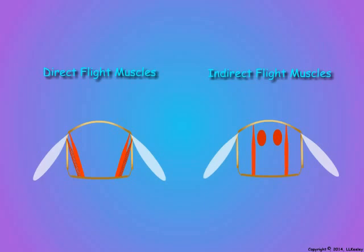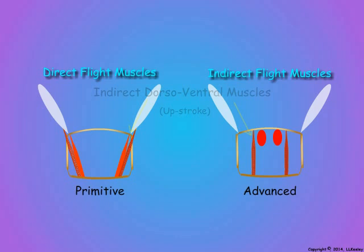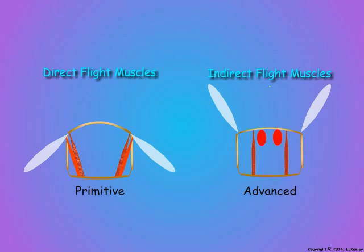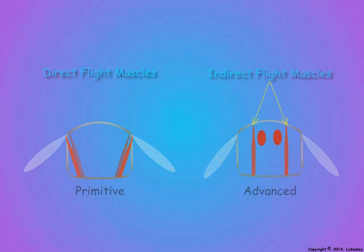Here is a cross-section of a thorax from a primitive insect such as a dragonfly, compared with that of a typical thorax from the more advanced flying insects. In both the primitive and advanced insects, indirect dorsal-ventral muscles produce the upstroke, but in the primitive orders, muscles attach directly to the base of the wing to produce the downstroke. However, in the advanced flying insects, both the upstroke and downstroke are produced by indirect muscles through distortion of the thoracic cuticle.